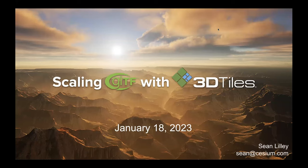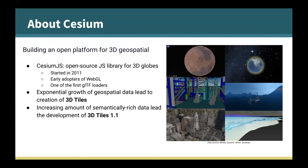I'm going to be talking about how we scale GLTF with 3D tiles — one of these hierarchical level of detail formats. At Cesium, we're building an open platform for 3D geospatial. We started with Cesium.js, an open source JavaScript library for 3D globes, started in 2011 and an early adopter of WebGL. We saw the need for an open standard for individual models — that's part of how GLTF formed. As we saw the exponential growth of geospatial data, GLTF alone was not enough, and that led to the creation of 3D tiles. More recently, the growth of semantically rich data with metadata attributes led to the development of 3D tiles 1.1.